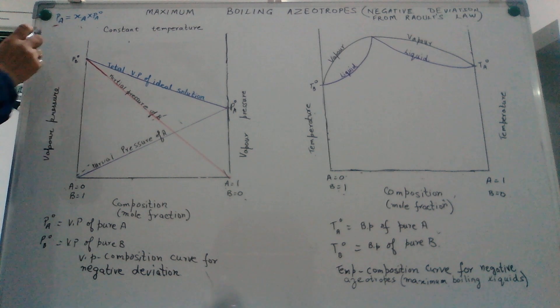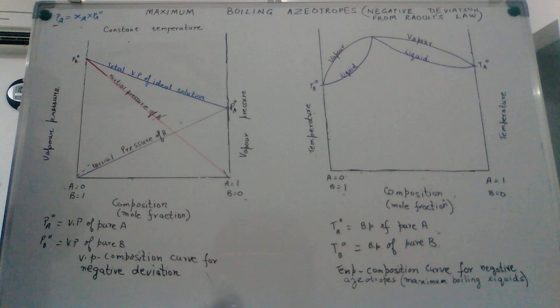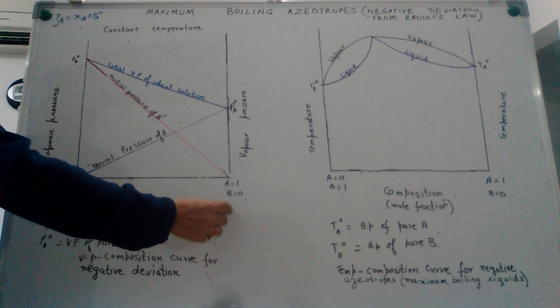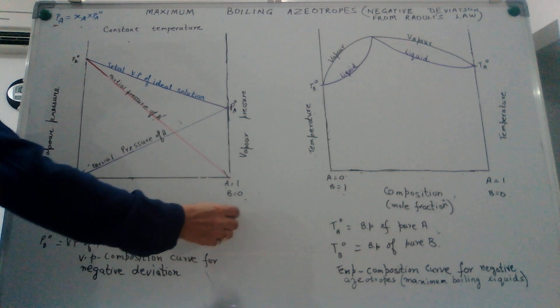So, when will a substance show negative deviation from Raoult's law, negative deviation or maximum boiling or minimum in the vapor pressure curve? To explain this we will take the example of HCl and water.